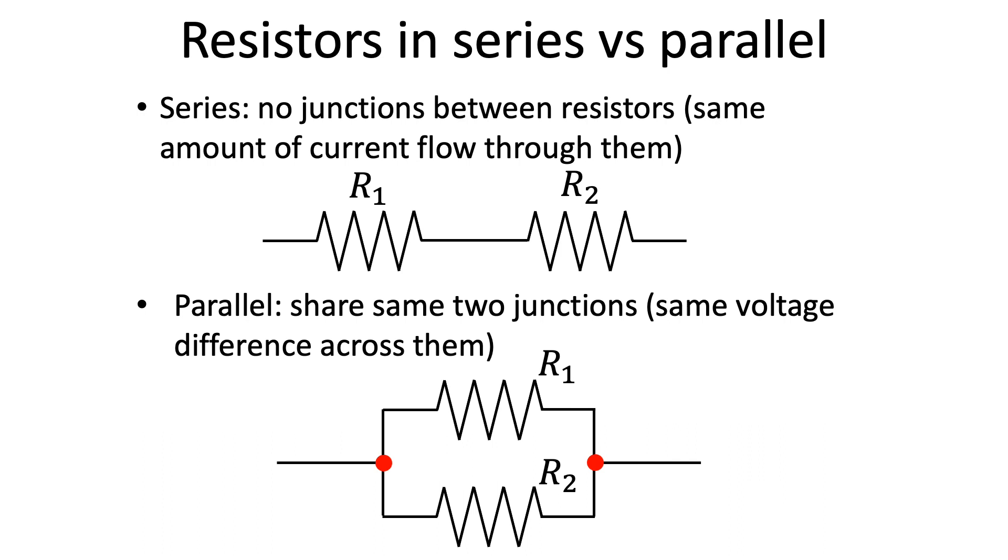Notice that both R1 and R2 are connected to the same two junctions, making them parallel. Resistors in parallel have the same voltage difference across them.